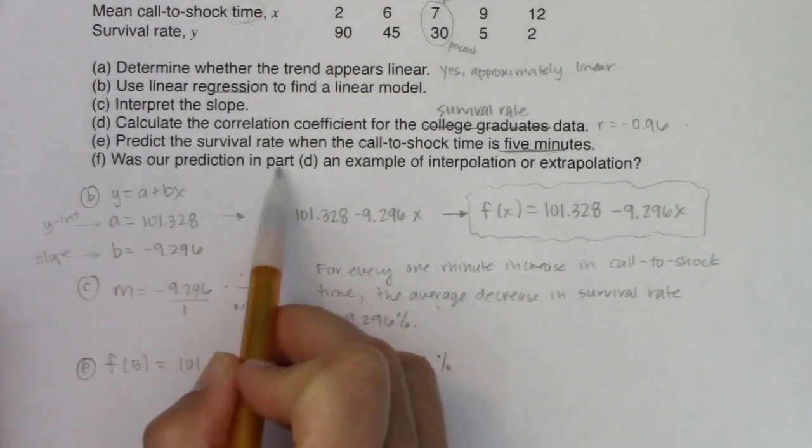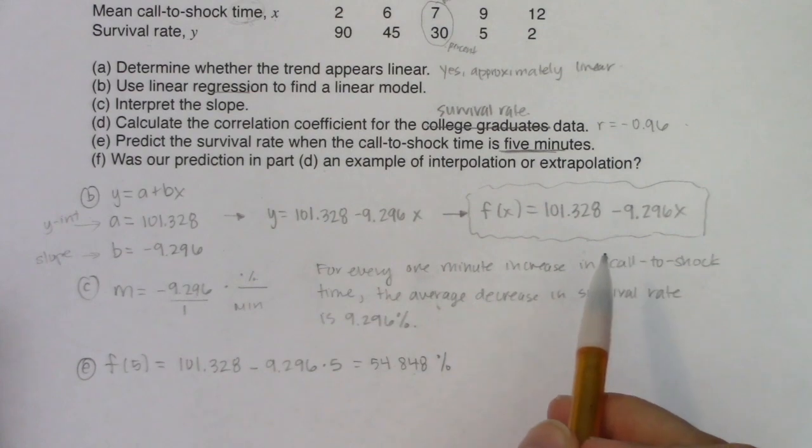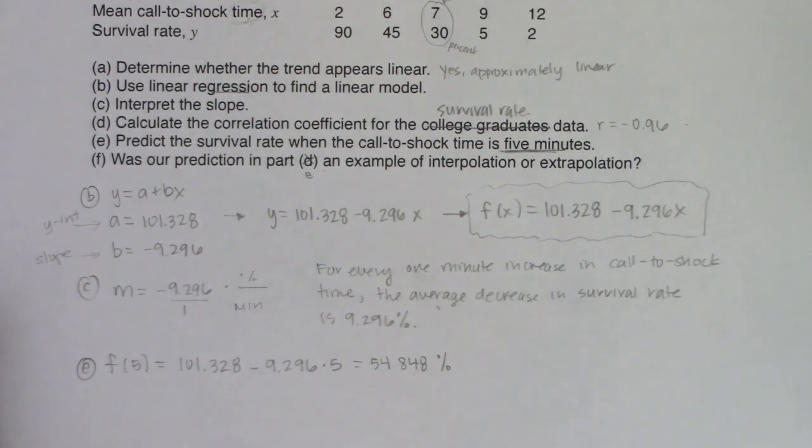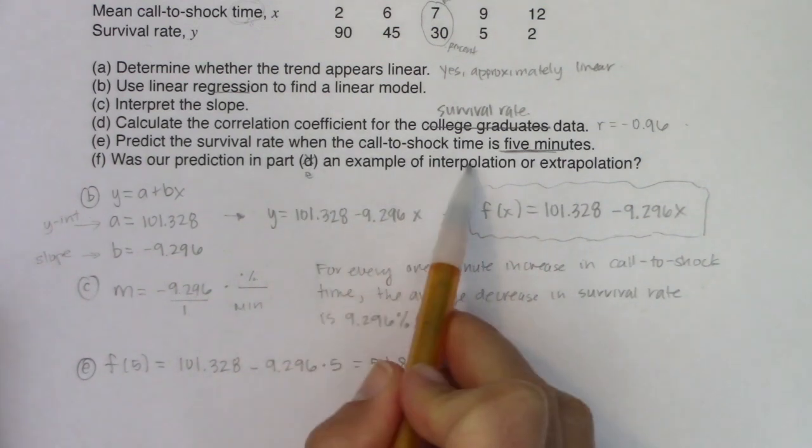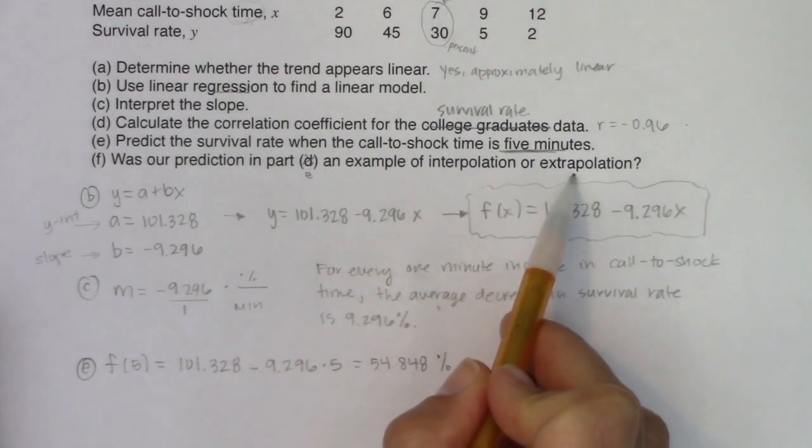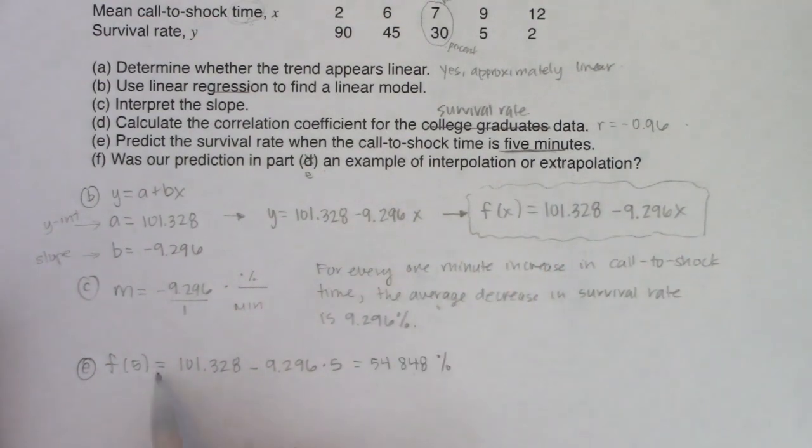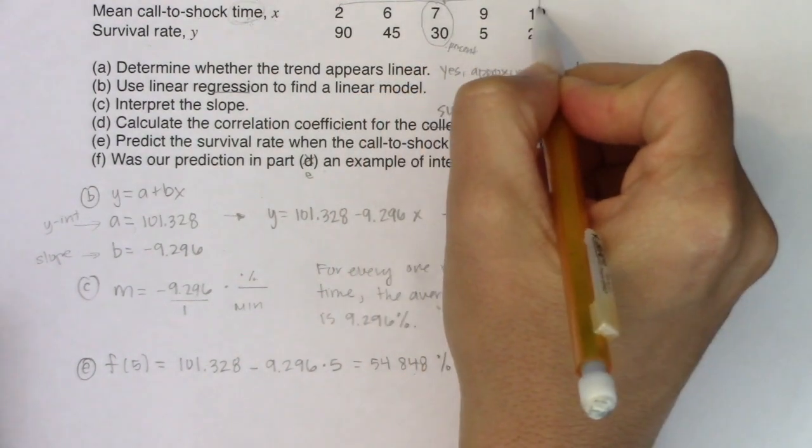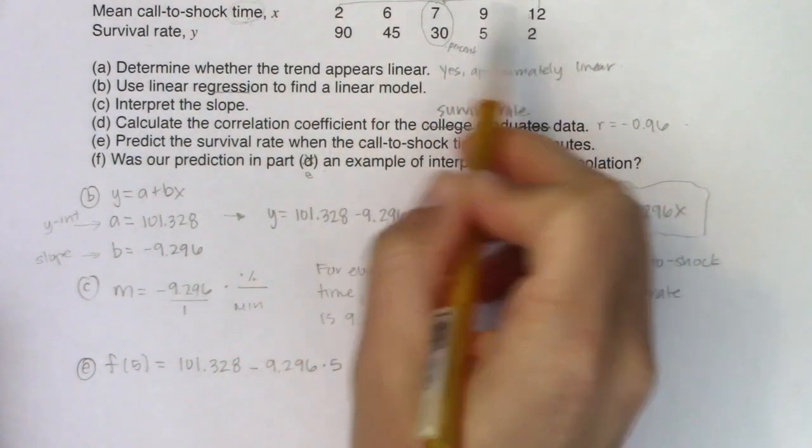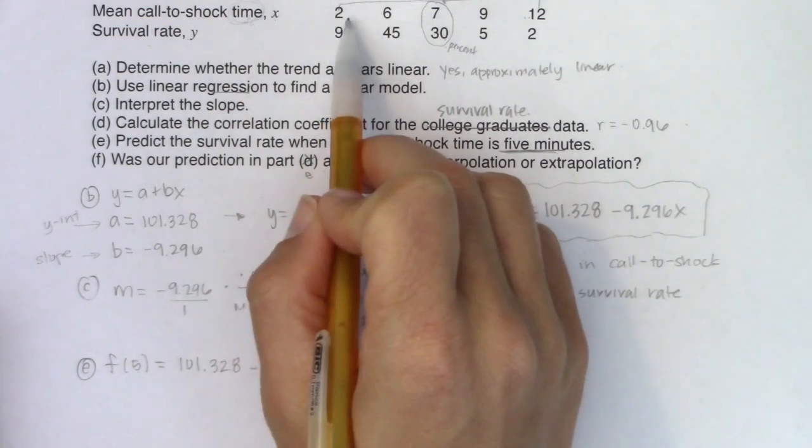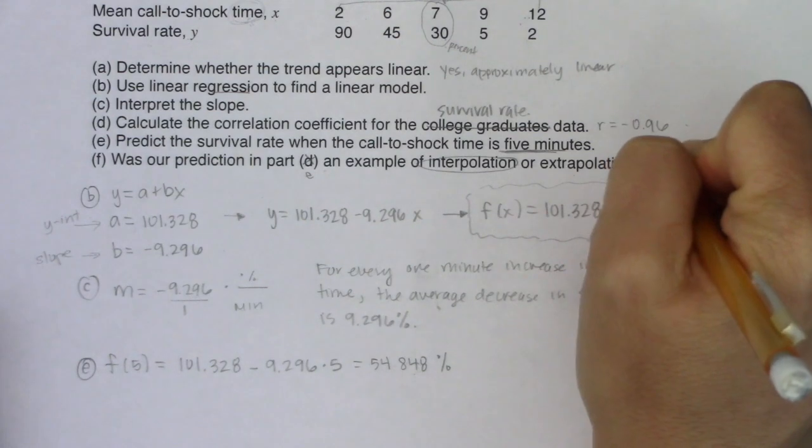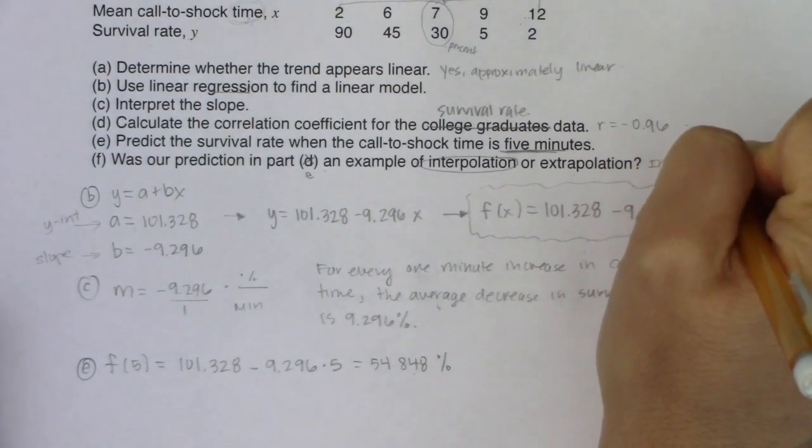Last but not least, it says was our prediction in part D. I have all sorts of typos here. This should definitely say part E. I will fix that as well. So was our prediction in part E an example of interpolation or extrapolation? Well, take a look at five minutes. This is X equaling five. It's right here inside of my initial data. My initial data's domain. It's in between two and twelve. So the answer to this is that our prediction was interpolation.